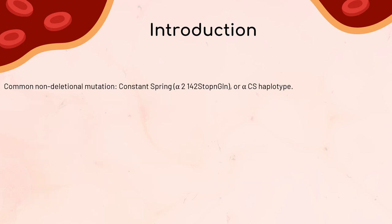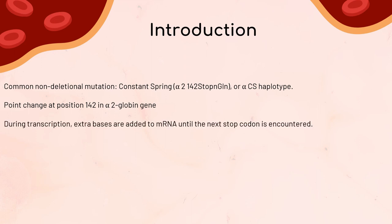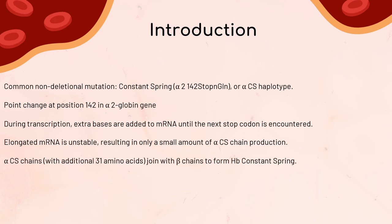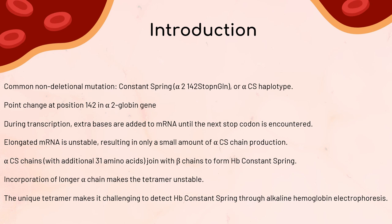One of the common non-deletional mutations is the constant spring, or alpha-CS haplotype. In this mutation, a point change at position 142 in the alpha-2 globin gene leads to a unique journey. During transcription, extra bases are added to the mRNA until the next stop codon is encountered. This elongated mRNA is unstable and results in the production of only a small amount of the alpha-CS chain. The alpha-CS chains, with an additional 31 amino acids, join with beta chains to form hemoglobin constant spring, but the longer alpha chain makes the tetramer unstable, creating a real challenge in detecting it through alkaline hemoglobin electrophoresis.